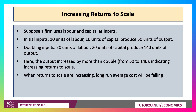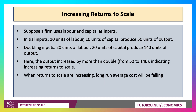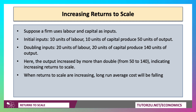Let's say a firm uses labour and capital. The initial input is 10 units of both labour and capital, and we get 50 units of output from that process. If we double the inputs to 20 of labour and capital, we might end up with 140 units of output. Inputs have doubled, but output has increased by more than double, indicating increasing returns to scale.